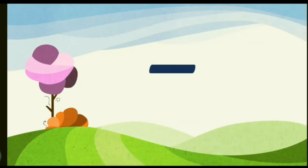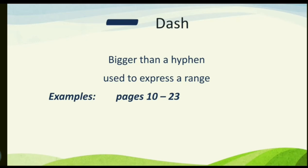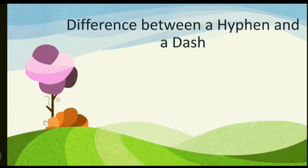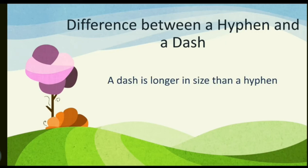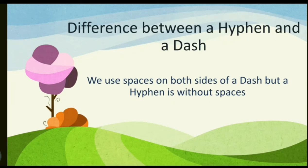Now we have the dash — a symbol that looks like a hyphen but is longer. A dash is used to express a range, for example: 'pages 10–23' means pages 10 to 23; '100–300 participants'; 'January–May 2009.' The difference between a hyphen and a dash: a dash is longer in size, and we use spaces on both sides of a dash, while a hyphen is written without spaces. For example: 'pages 10 – 23' (with spaces) versus 'T-shirt' (no spaces).